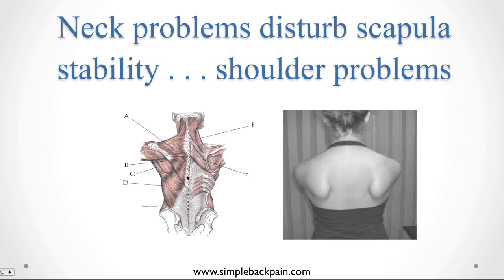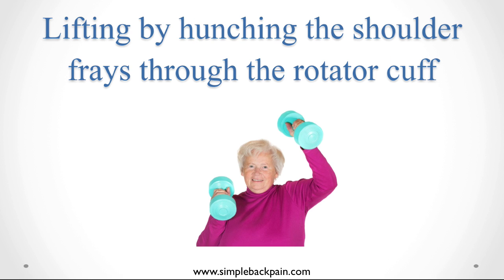Now when the shoulder blade isn't stable, the arm bone tends to bump up under this ledge and fray through. We see this again with lots of people doing exercises for the shoulder. What the fitness industry needs to understand is that when teaching people to lift, the shoulder should stay down — otherwise, she's fraying through here.